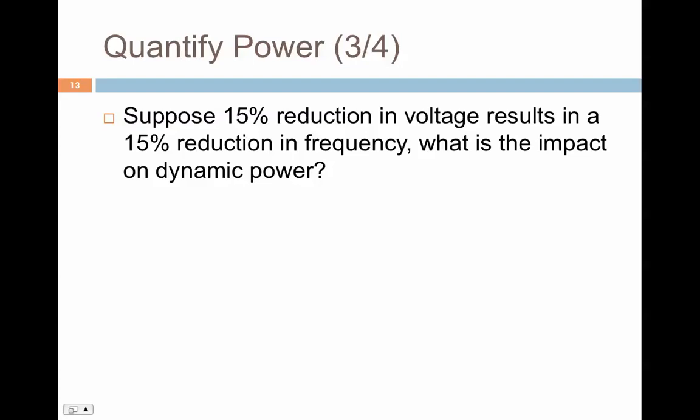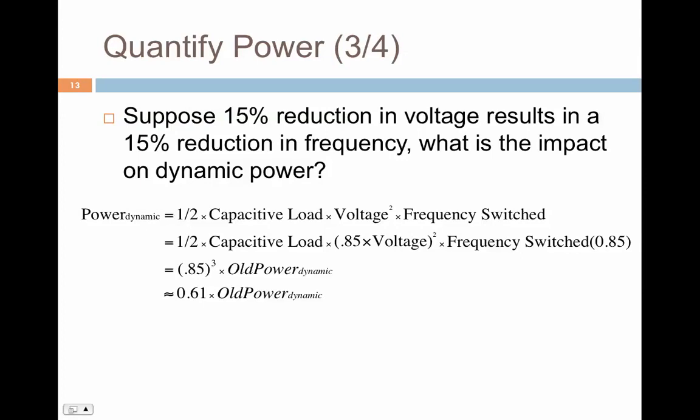We were asking what happens when we reduce voltage and frequency both by 15% and how does dynamic power change. The dynamic power is half the capacitive load times voltage squared times frequency switched. Voltage is reducing by 15%, so it becomes 0.85 of the original voltage, and frequency is also reduced by 15%, so it becomes 0.85 of the original frequency. That becomes 0.85 cubed of the old dynamic power, which is around 60% of the old power.